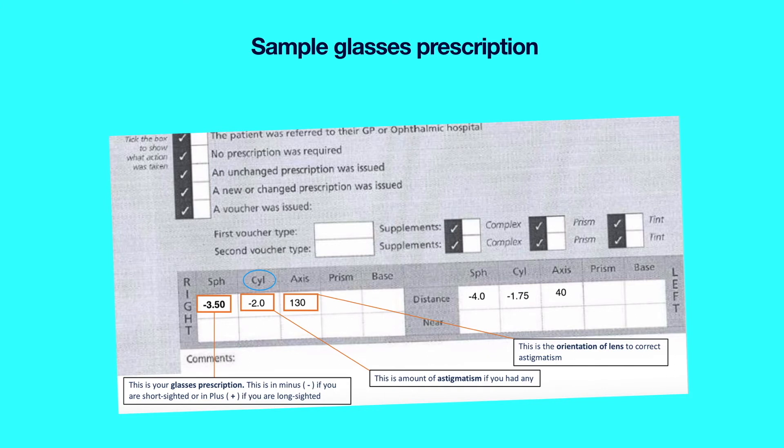You do not need to worry about the plus or minus signs in the cylinder box or the third box, which is the orientation of the astigmatism. Alternatively, the glasses prescriptions may look like this one here.